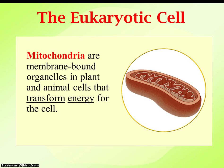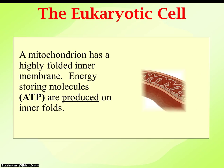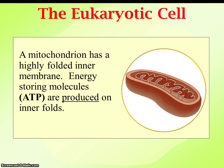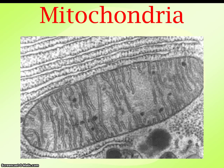Mitochondria — another organelle, and kind of like the powerhouse of the cell. This is where our energy comes from. It has an outer membrane and an inner membrane. It's found in all eukaryotic cells, and this is where energy transformation occurs. The energy molecule is ATP — adenosine triphosphate. This inner folded membrane of the mitochondria is where all of the ATP is going to be produced and stored within the cell. Here's a microscopic picture where you can see these inner folds of the mitochondria's inner membrane where ATP is produced and stored.